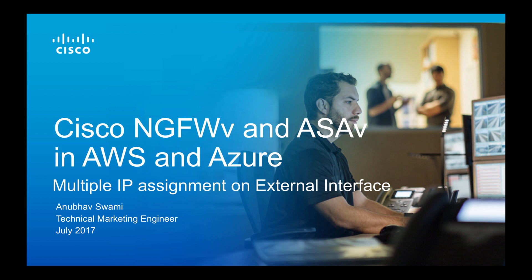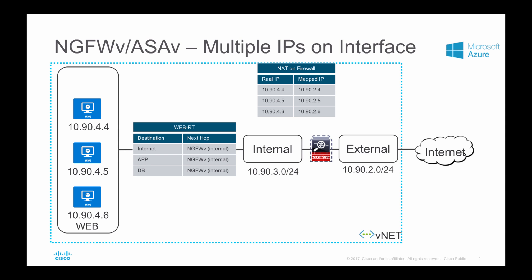I will cover how to assign multiple IPs on the external interface to allow one-to-one static translation. This is an example of Microsoft Azure. I have multiple web servers protected by NGFW or ASA, and the requirement is to assign multiple IPs on the external interface so that I can enable one-to-one translation.